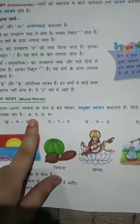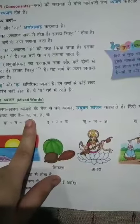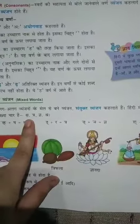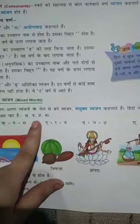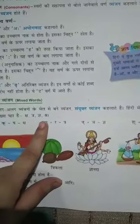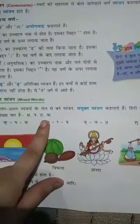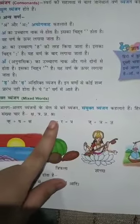Look here. The four Sayyukht Venjan are: Sha — as in Shatriye; Tra — as in Trashul; Gya — as in Gyani; Shra — as in Shramik.